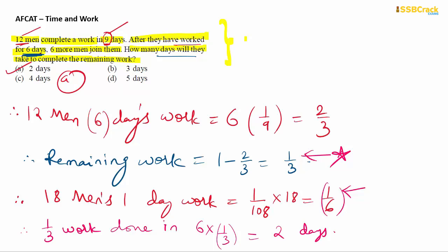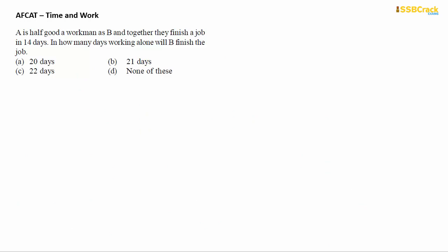Next question: A is half as good a workman as B, and together they finish a job in 14 days. In how many days will B, working alone, finish the job? Since you know their combined days, you subtract A's contribution to find B's days. We start by letting B's days be unknown.